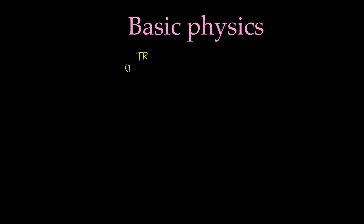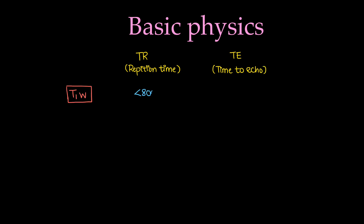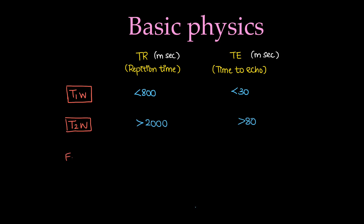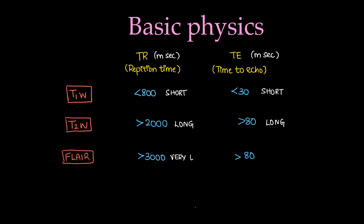For MD and DNB radiology students: in exams, you must know the basic physics — repetition time (TR) and time to echo (TE) are the two factors set for any sequence. On T1 weighted images: TR less than 800ms, TE less than 30ms — short TR, short TE. On T2 weighted images: TR more than 2000ms, TE more than 80ms — long TR, long TE. On FLAIR: TR more than 3000ms, TE more than 80ms — very long TR and long TE.